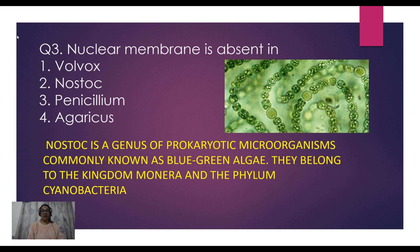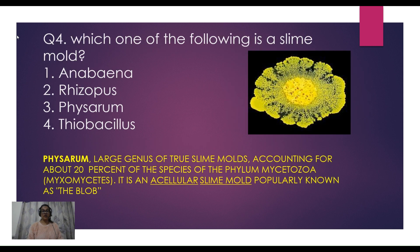The third question asks: nuclear membrane is absent in the case of Volvox, Nostoc, Penicillium, or Agaricus? Prokaryotes are primitive organisms that lack a nuclear membrane and membrane-bound organelles, while eukaryotic cells do have a nuclear membrane. Nostoc is the correct answer because it is a prokaryotic microorganism, commonly known as blue-green algae, belonging to kingdom Monera and phylum Cyanobacteria.